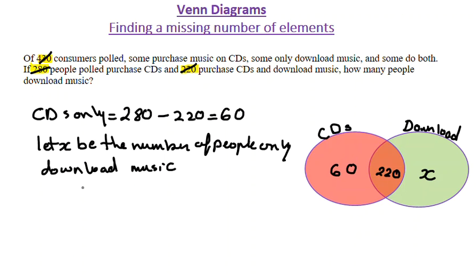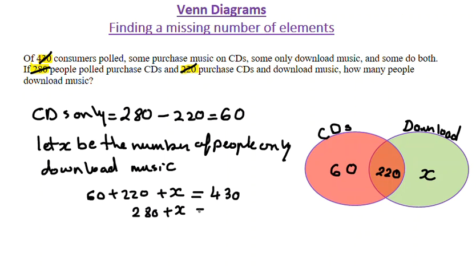So I'm going to write that as an equation: 60 plus 220 plus X equals the total number of people, which is 430. We know that this simplifies to 280 plus X equals 430. And I can find that the value of X is 150. This is the value of people who actually only download music.